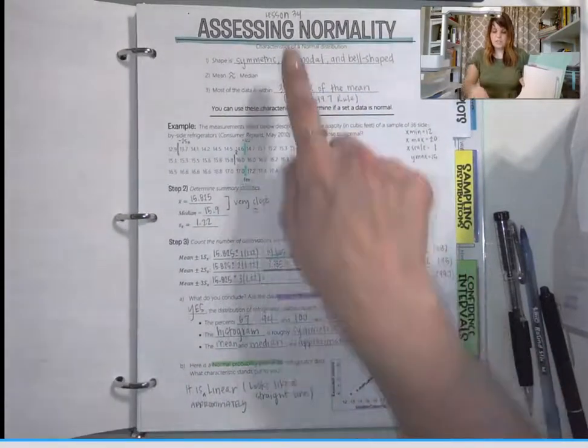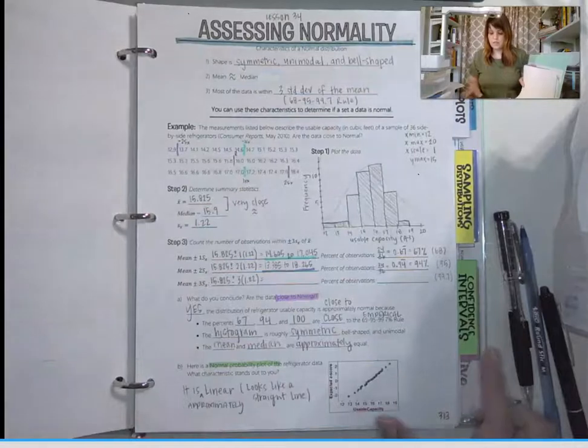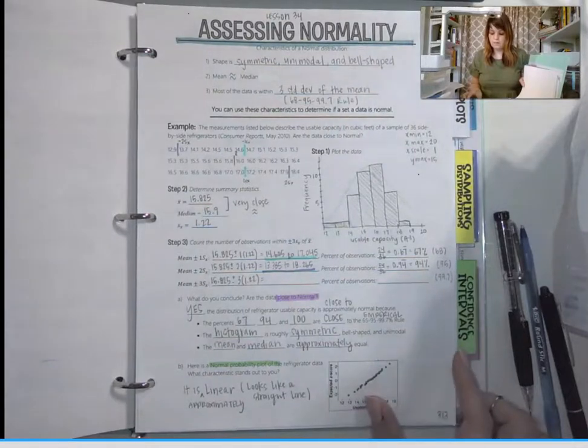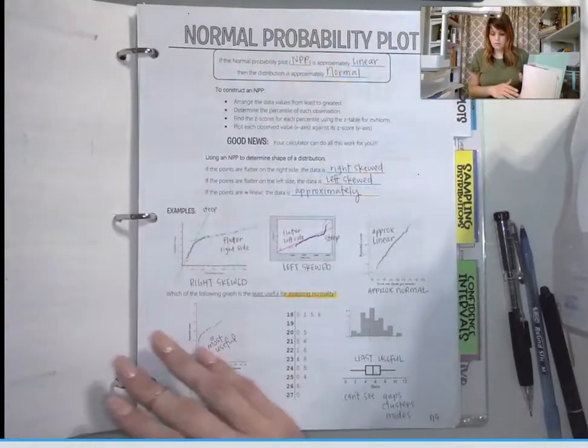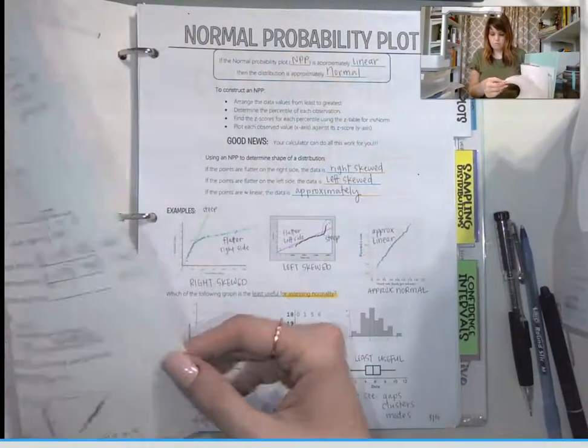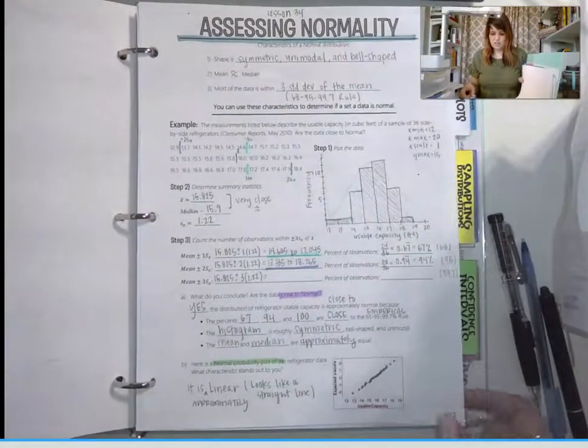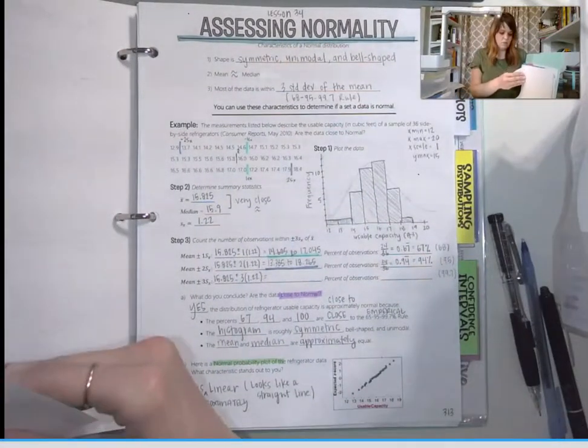Page 313 is lesson 34, assessing normality. I think I said 313 there. Yeah, so 313.